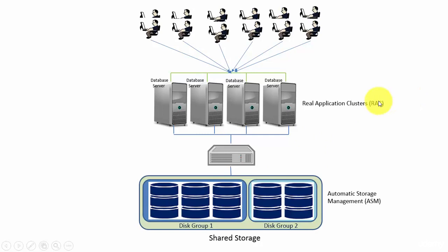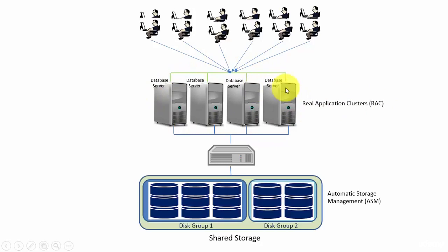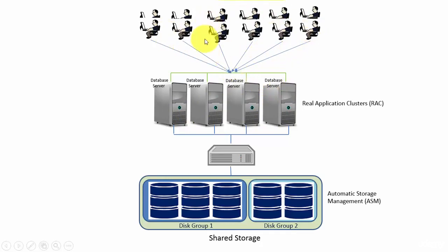Oracle took those grid computing concepts and applied them to the Oracle database. If you look at the architecture, Oracle provided the option of maintaining multiple database servers, which is referred to as Real Application Clusters, or RAC. In RAC, you have a bunch of database servers where the load is evenly distributed among users. Even if you have thousands of users requesting database access, the load is evenly distributed so there are no performance problems. And for high availability, even if we lose a couple of data servers, the other database servers remain up and running to serve the users.